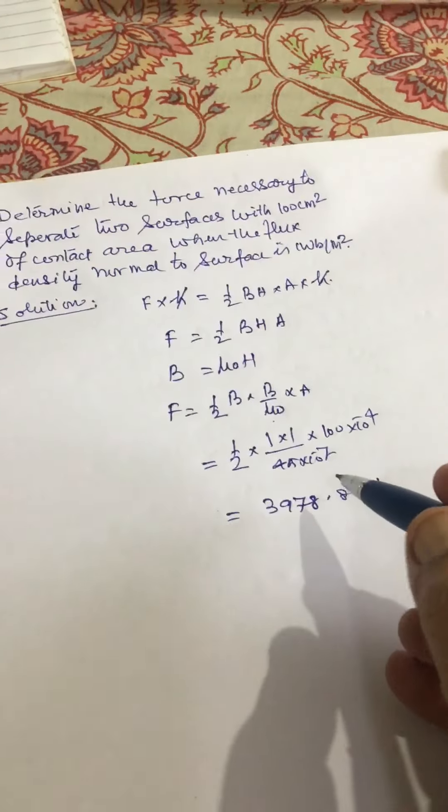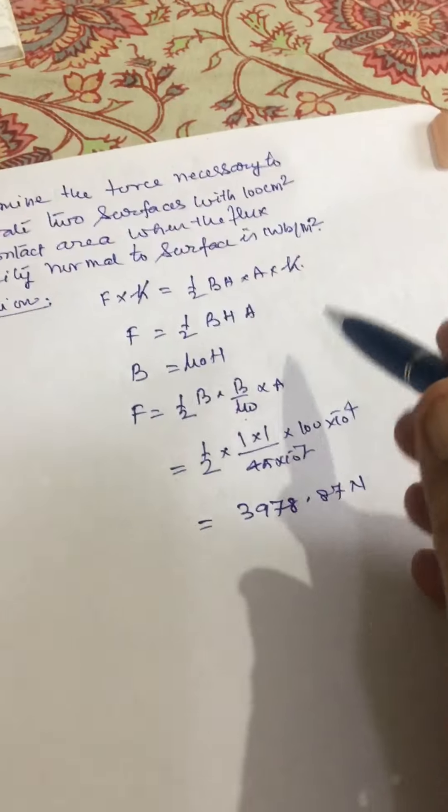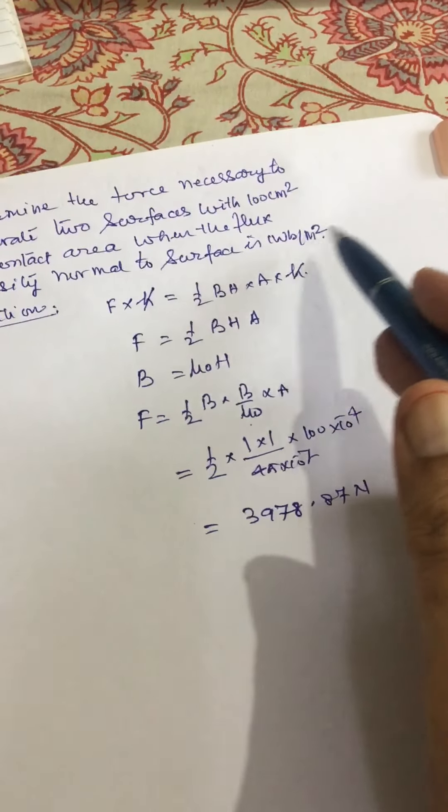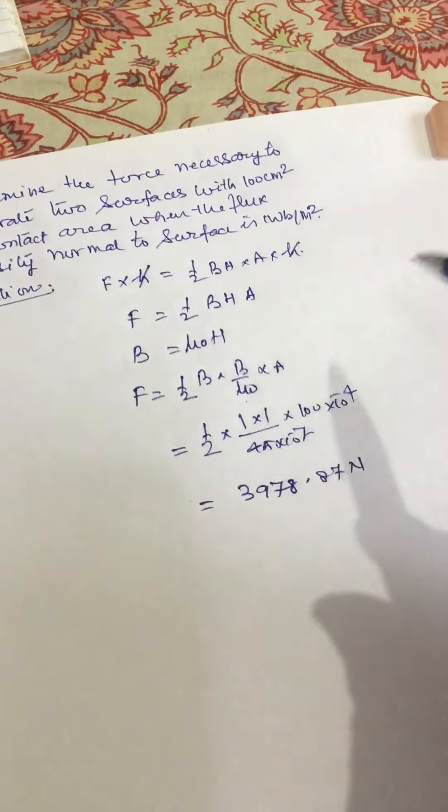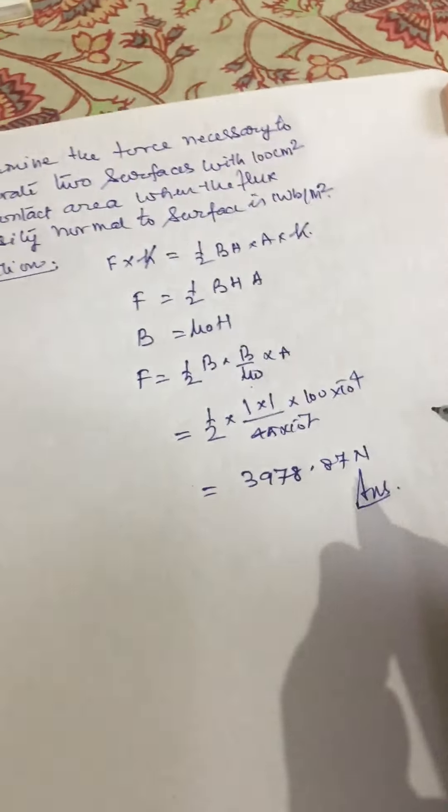So this much force will be needed to separate the surfaces when the perpendicular flux density is 1 weber per meter square. This is how we can solve this magnetic circuit problem.